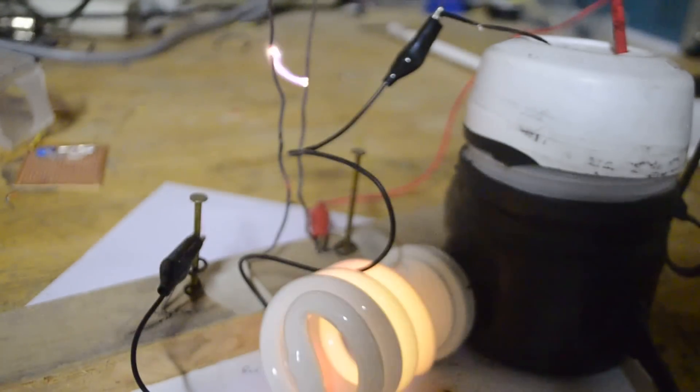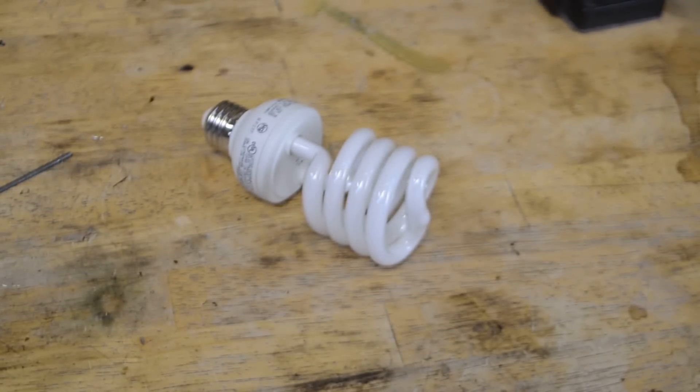You're watching Keystone Science, and in today's episode we're going to show you how to make a very simple high voltage power supply out of a fluorescent bulb.